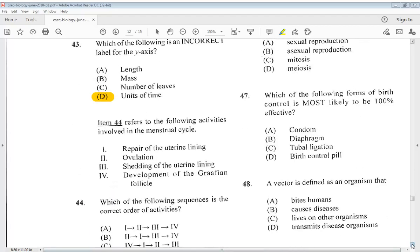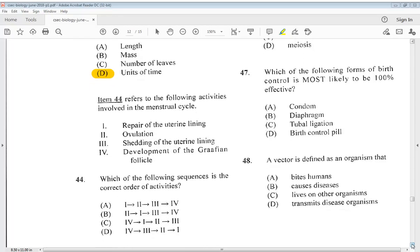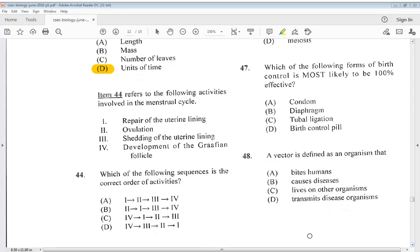Number 44. Item 44 refers to the following activities involved in the menstrual cycle. 1. Repair of the uterine lining. 2. Ovulation. 3. Shedding of the uterine lining. 4. Development of the Graafian follicle. Which of the following sequences is the correct order of activities? So we know it begins with 1, repair of the uterine lining, then 2 ovulation, then 3, then 4. So the answer would be A.